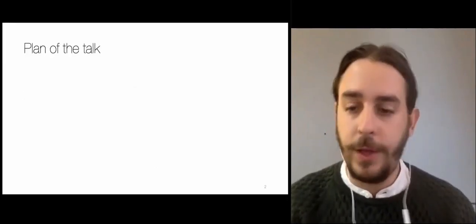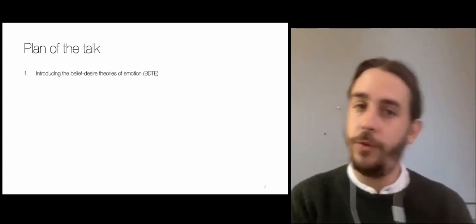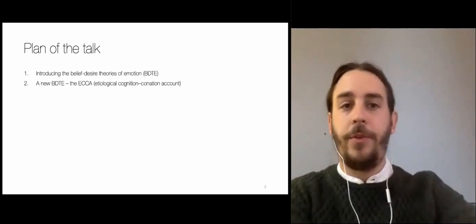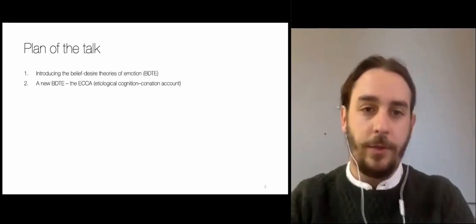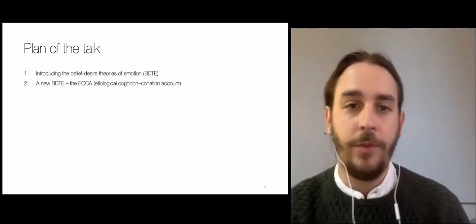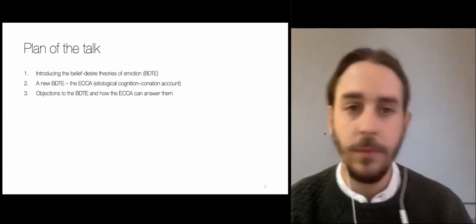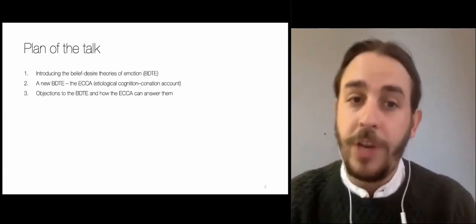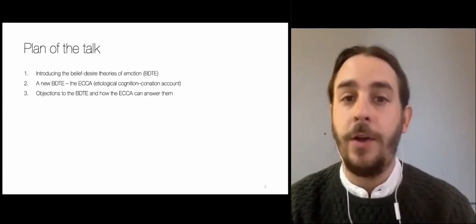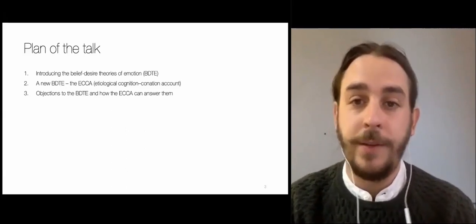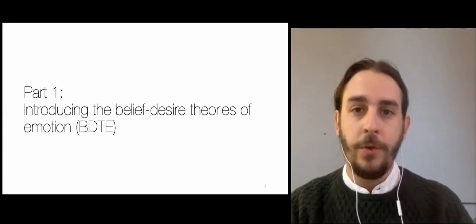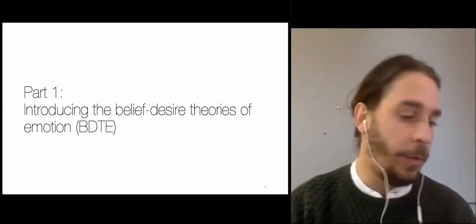The plan of the talk is in three parts. First, I'm going to introduce the belief-desire theories of emotion in general. Then I'll present the new BDT that I talked about — the Etiological Cognition Account, or EKA. Then I'll present objections to the belief-desire theories of emotion and how the EKA can answer these objections.